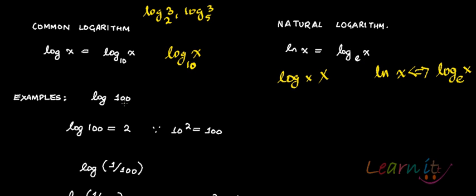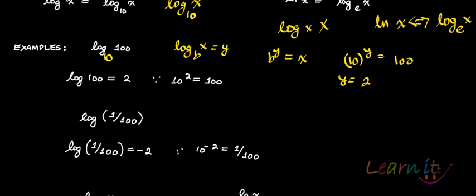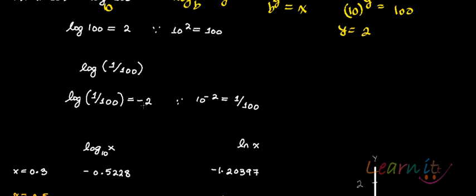For example, log of 100 — since no base is written, it means log of 100 to the base 10. Using b to the power y equals x, with b equal to 10 and x equal to 100, y should equal 2. So log of 100 equals 2. Similarly, log of 1/100 equals minus 2, because 10 to the power minus 2 gives 1/100.